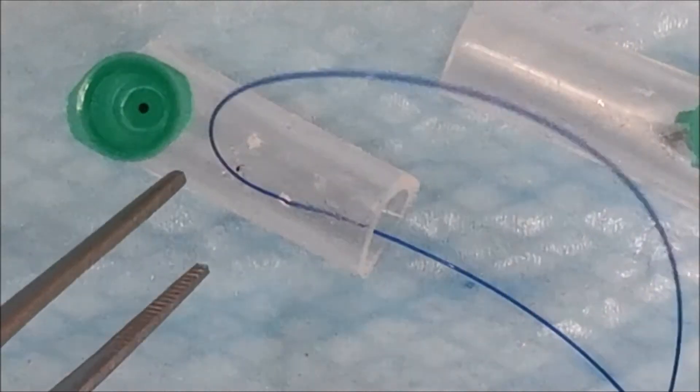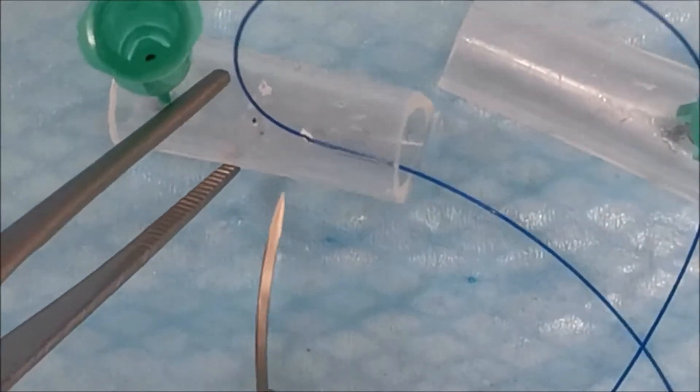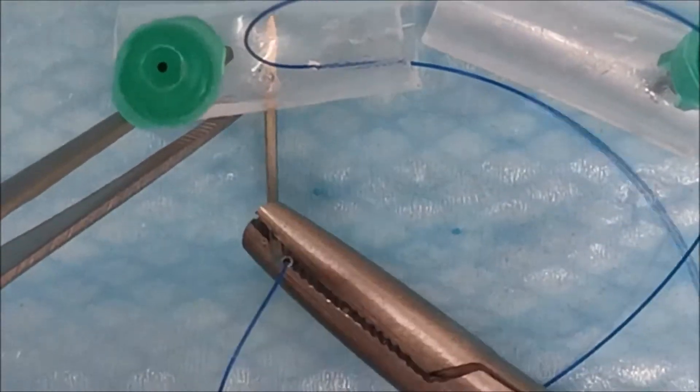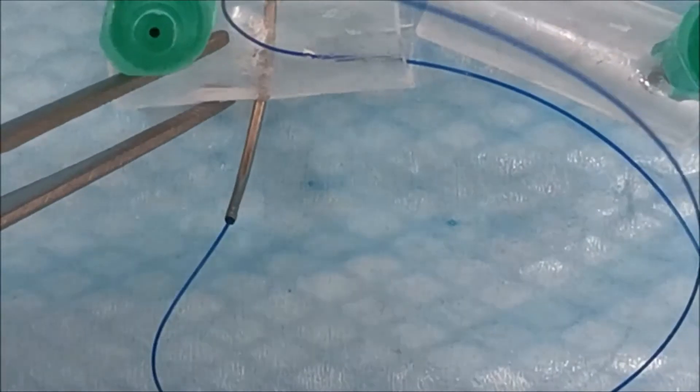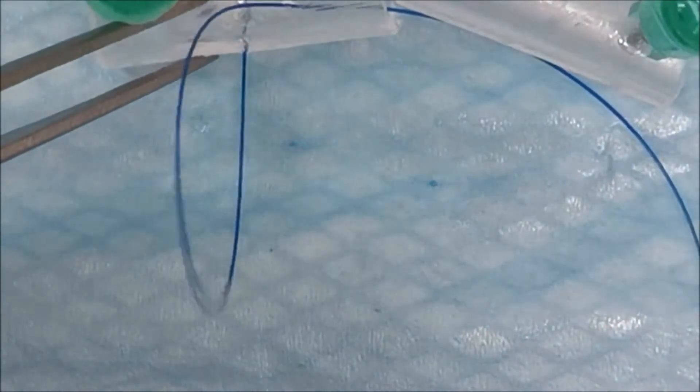Common errors experienced during the tendon repairs are, firstly, when you do a modified Kessler or a cruciate and you do your transverse suture like this.